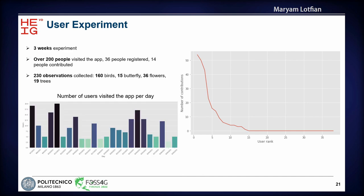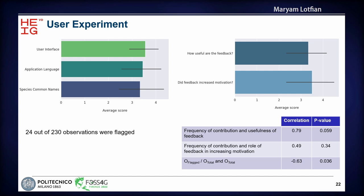During the three-week experiment, 230 observations were collected, including bird observations and other types of species. We sent a questionnaire to participants afterwards to gauge their opinion on the interface usability and, more importantly, how they felt about the real-time feedback — how useful it was and whether it increased their motivation to continue contributing. We found a high correlation between the number of contributions and how useful participants rated the feedback: people who contributed more rated the feedback as more useful. Although this correlation was not statistically significant, probably due to the small sample size, it was a preliminary positive result.